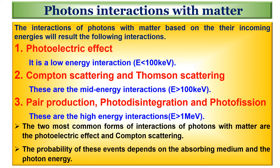The following interactions are covered: photoelectric effect, which is a low energy interaction; Compton scattering and Thomson scattering, which are mid energy interactions; and pair production, photo disintegration and photo fission, which are high energy interactions. The two most common forms of interactions of photons with matter are the photoelectric effect and Compton scattering. The probability of these events depends on the absorbing medium and the photon energy.